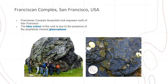One of the places where you can find blueschist exposed at the surface is in the Franciscan Complex in San Francisco, USA. The Franciscan Complex blueschist is exposed at the north of San Francisco. If you look at the pictures, you can see the rocks are actually quite blue — this blue color is due to the presence of the amphibole mineral called glaucophane.